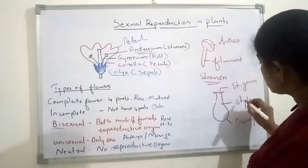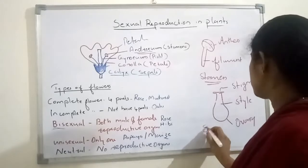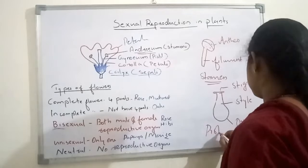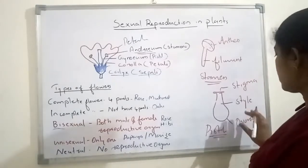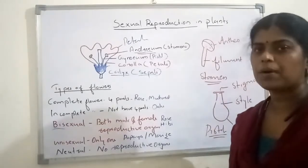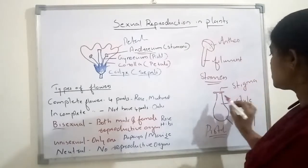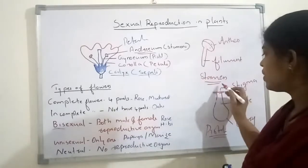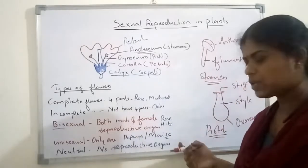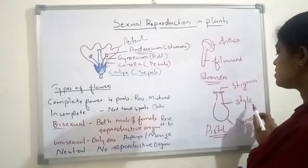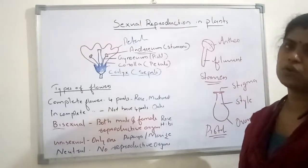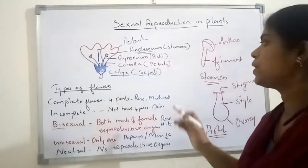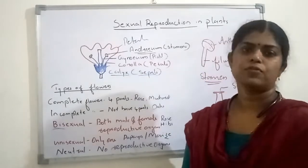The bottom or basal portion is known as the ovary. These three structures together are known as the pistil. The distal portion is the stigma — on the stigma, the pollen grain lands at the time of pollination. The tube-like portion is the style, and the bulb-like portion is the ovary. All together it is known as the pistil, and pistils make up the gynoecium — the female part of the flower.